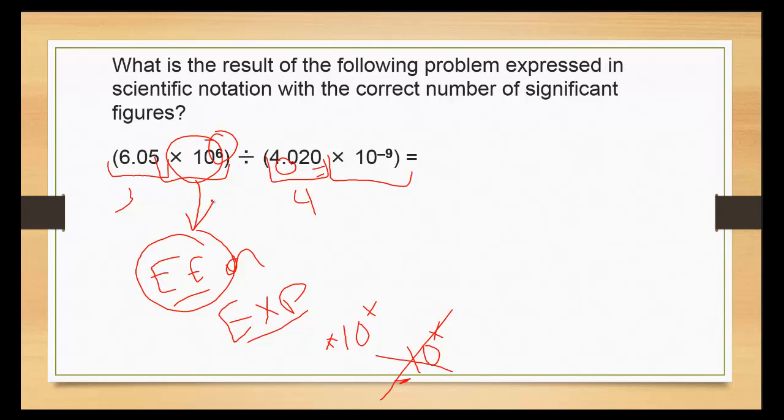It's 6.05 EE 6 divided by 4.020 EE negative 9. Once again, I probably have to do a second function EE. That comes out to be 2.4321 times ten to the negative two.